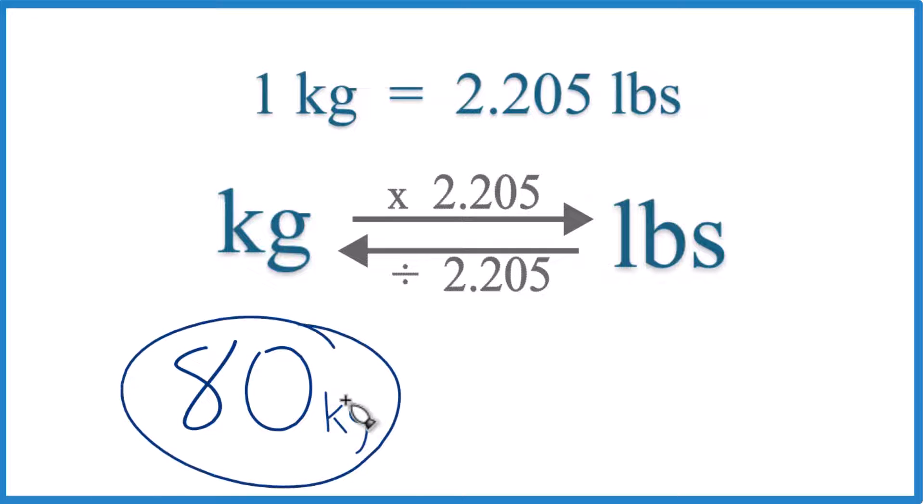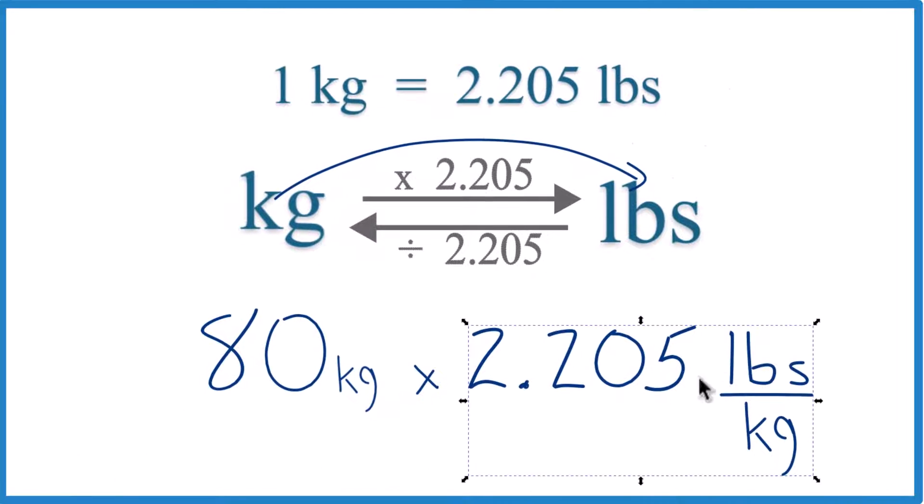So we have 80 kilograms. We want to get to pounds here. So kilograms to pounds, we multiply by 2.205, like this. And note, that's 2.205 pounds per kilogram. That comes from our conversion factor.